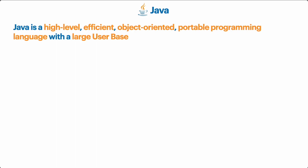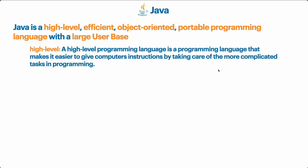Let's look at what 'high-level' means. A high-level programming language is a programming language that makes it easier to give computers instructions by taking care of the more complicated tasks in programming. There are three sub-levels of programming languages. The first type is a low-level programming language — like zeros and ones. A computer's native language is binary, and that's a low-level programming language. Nobody codes in low-level languages because they're really hard — even printing someone's name on screen could take tens or hundreds of lines of binary code.